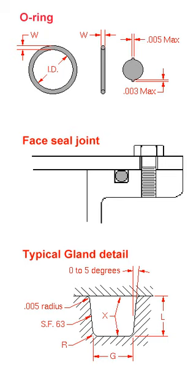O-rings can be produced by extrusion, injection molding, pressure molding or transfer molding.